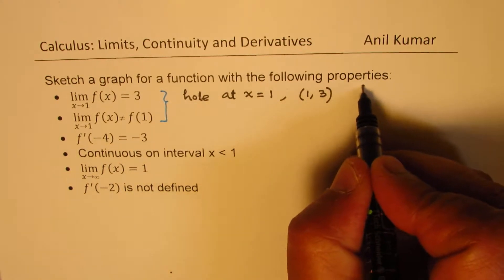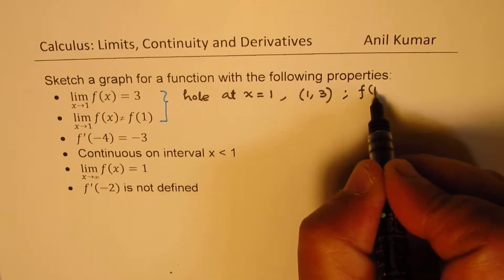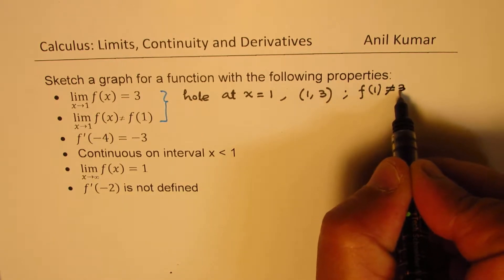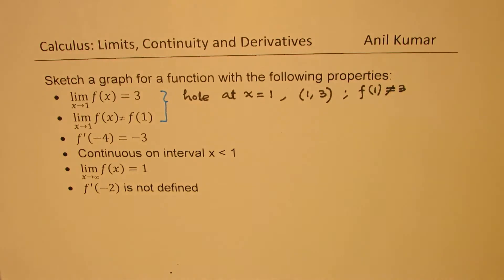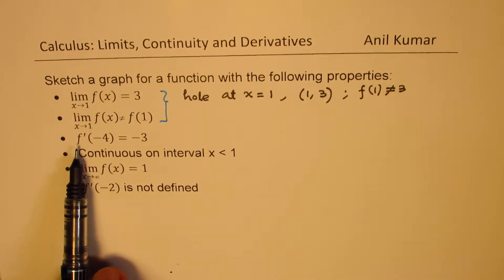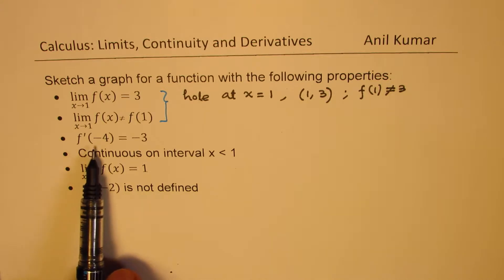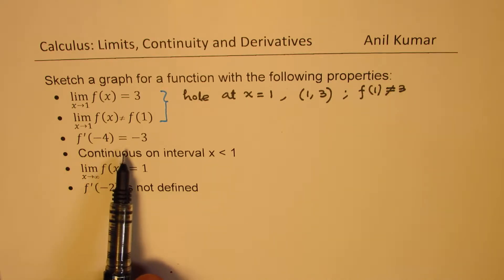So that means the value of the function at 1 is not equal to 3. It could be anything but 3. The third condition here is the derivative, that means the slope, of the function at minus 4 is minus 3.